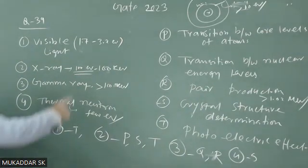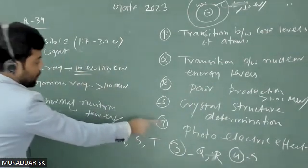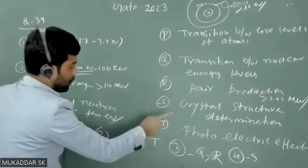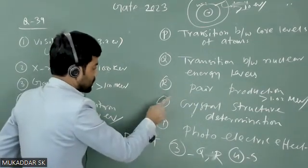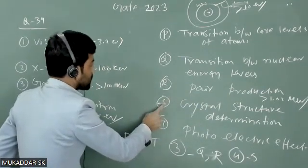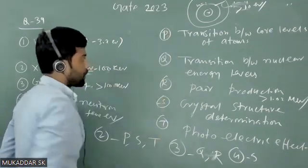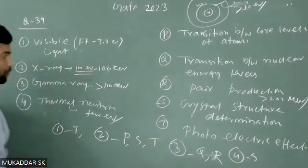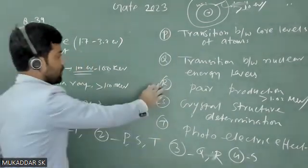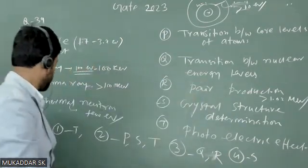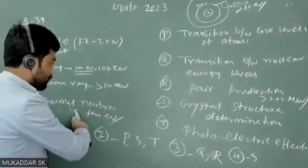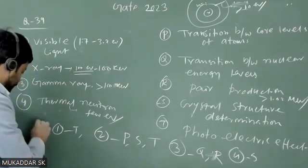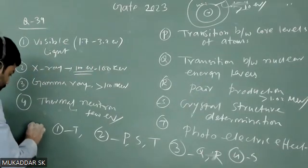So to summarize the matching: visible light can do the photoelectric effect; x-ray can do the photoelectric effect, crystal structure determination, and transition between core levels; gamma ray can do pair production and transition between nuclear energy levels; and thermal neutron can do crystal structure determination. According to the given options, option A will be correct.